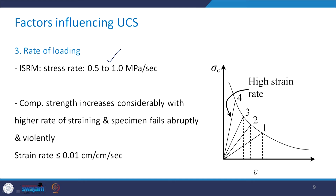The compressive strength increases considerably with higher rate of straining and the specimen fails abruptly and violently. A figure shows compressive strength vs strain, and as strain rate increases from 1 to 4, the slope of the stress-strain curve becomes increasingly steep. When failure takes place at high strain rate, it is abrupt and violent. Therefore it has been recommended that the strain rate must be less than or equal to 0.01 centimeter per centimeter per second in the lab.